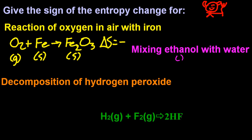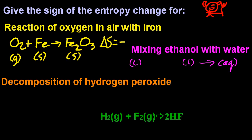So mixing ethanol with water. Well, ethanol and water are both liquids, and when you mix them together it becomes aqueous. So delta S is plus for that one — it's getting more disordered. The two pure liquids mixing together to make a solution gives a higher level of entropy, a higher level of disorder. Delta S is plus.